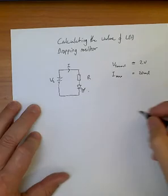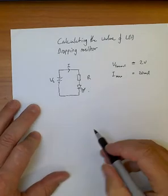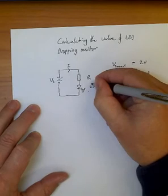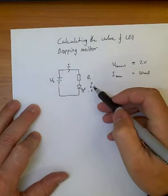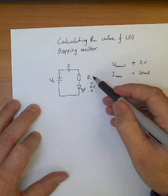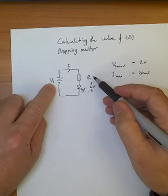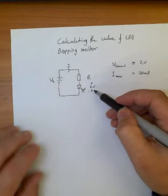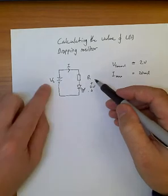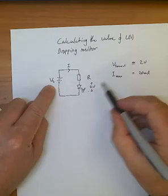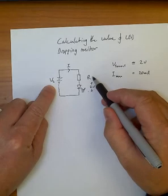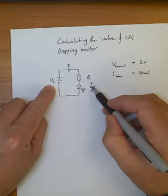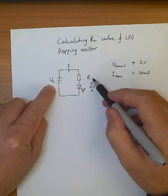So if I have 2 volts across my LED, then I must have, well whatever Vs is has to add up to the voltage across my resistor plus the voltage across my LED. So if this was 9 volts, then this has to be 7 plus 2 is 9. So the resistor voltage must be 7 volts.